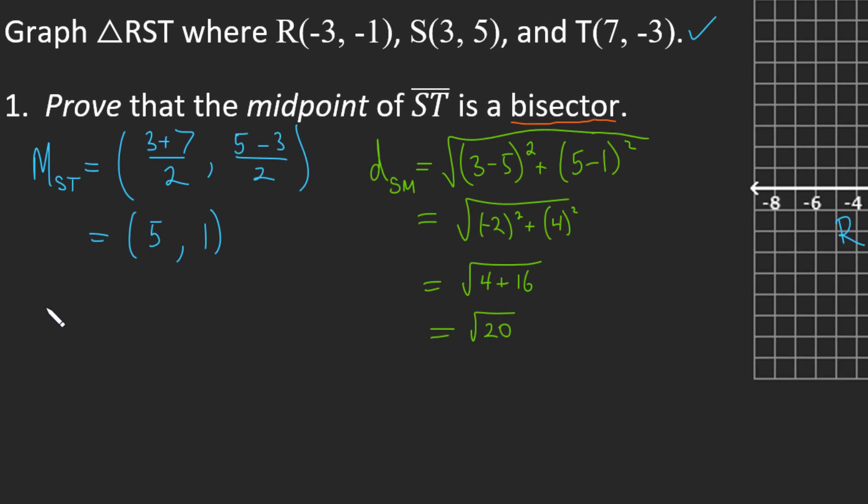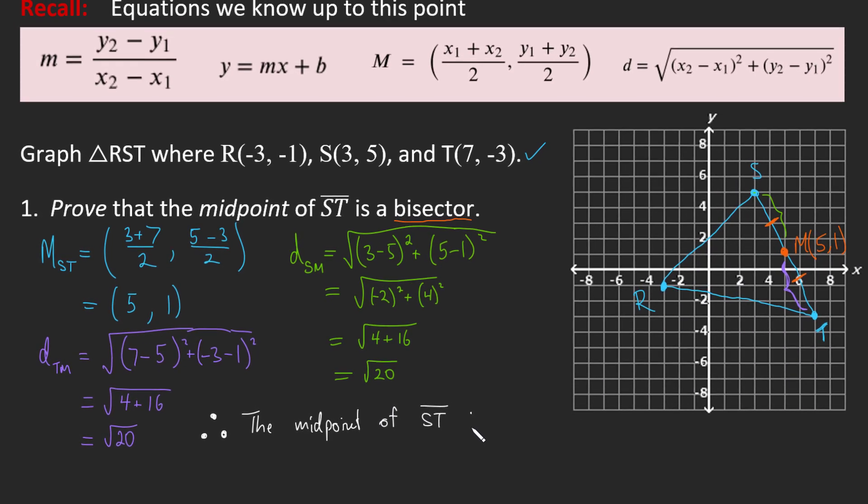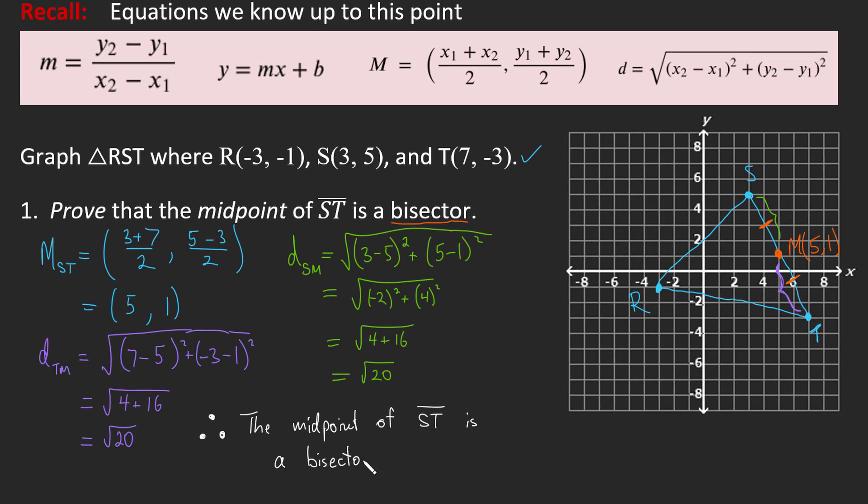Now we're going to find the length of the remainder here, which I'm trying to highlight in purple, from M to T. So the distance of TM, we're going to follow the same setup of our delta X and our delta Y. T delta X, 7 minus 5 for the midpoint, negative 3 minus 1. That is the square root of 7 take away 5 is 2 squared is 4, and negative 4 squared which is 16. So we're going to have the same distance, the square root of 20 and the square root of 20. We can say definitively, therefore, the midpoint of ST is in fact a bisector. It cut ST in half.